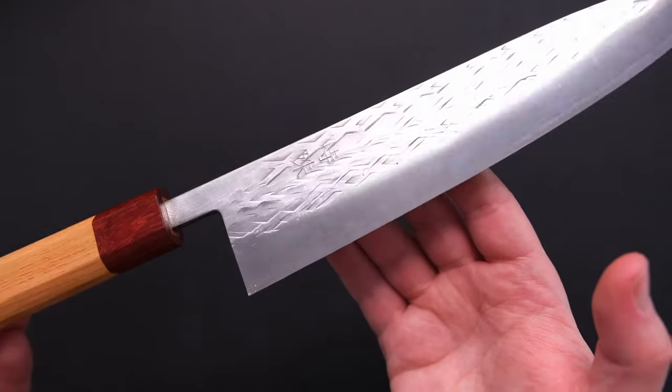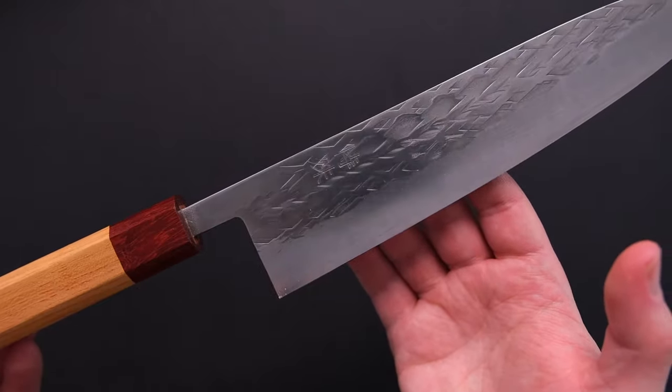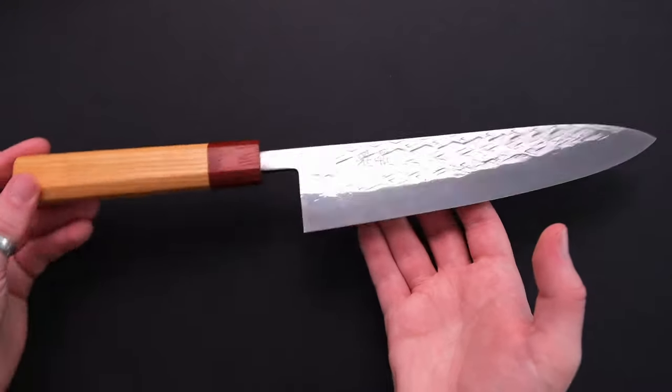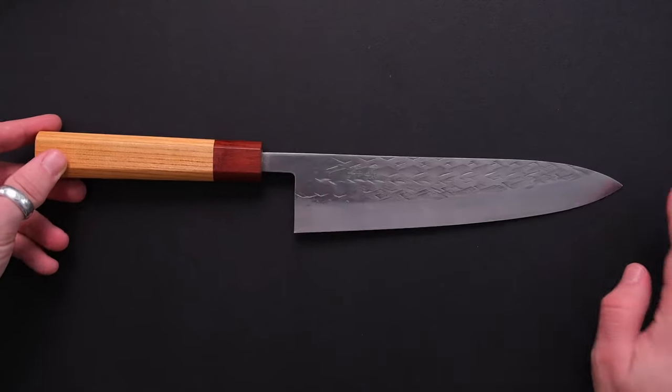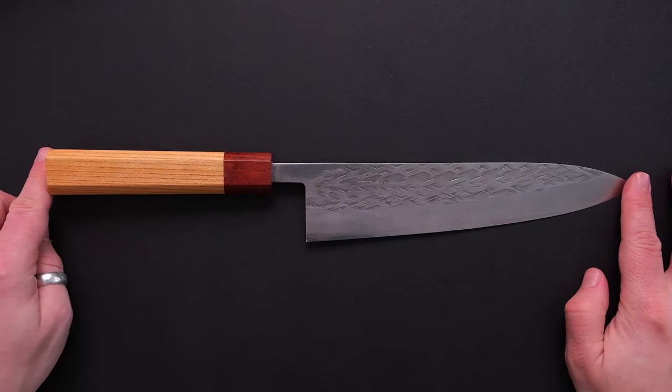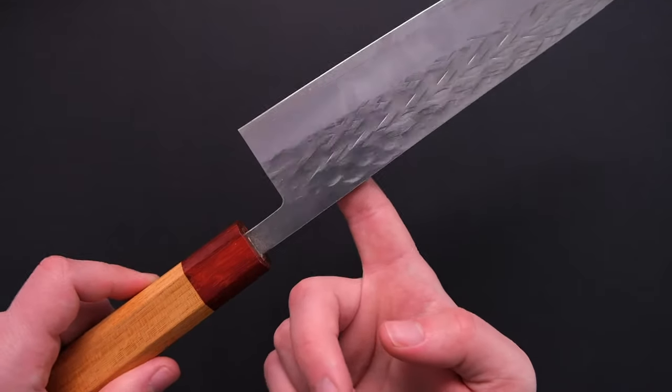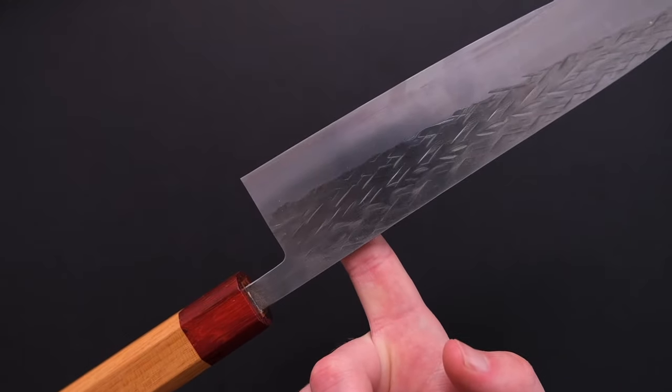The knife also sports a hammer-toned Tsuchimi finish and has a HRC value of approximately 61-62. The total length of the knife is 368mm, weighs in at 169.8 grams, and the balance point sits just about here.